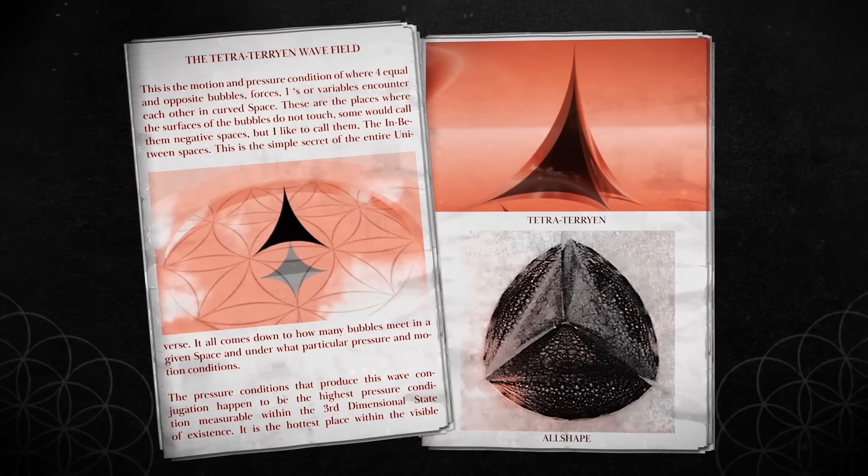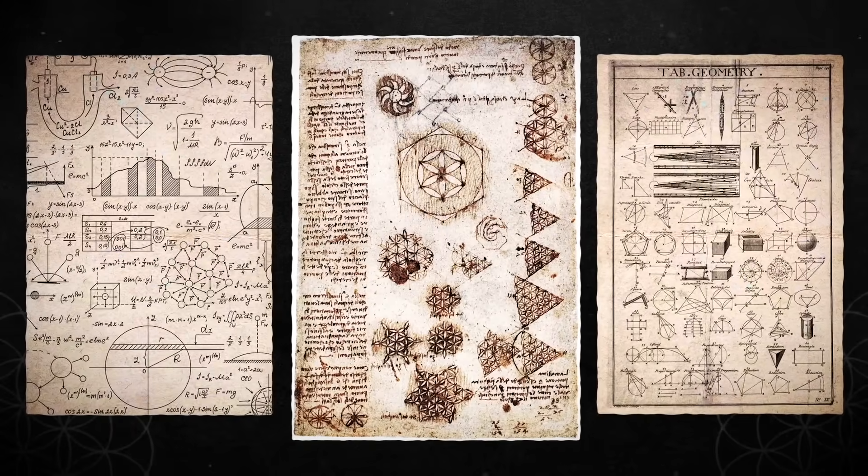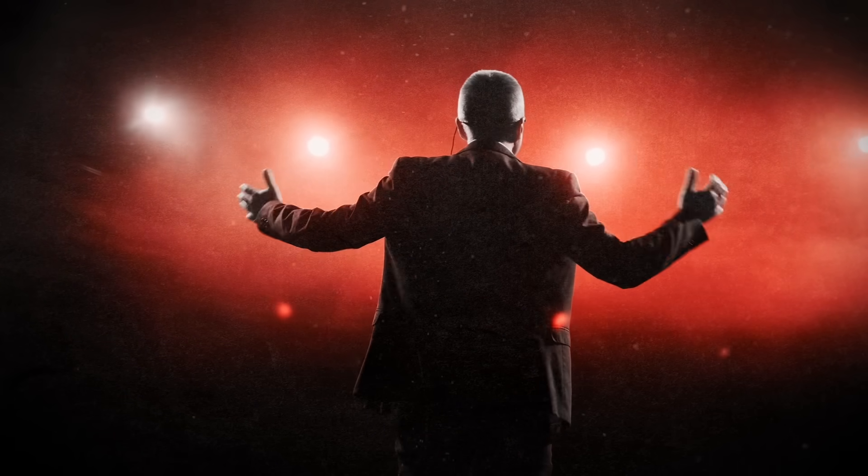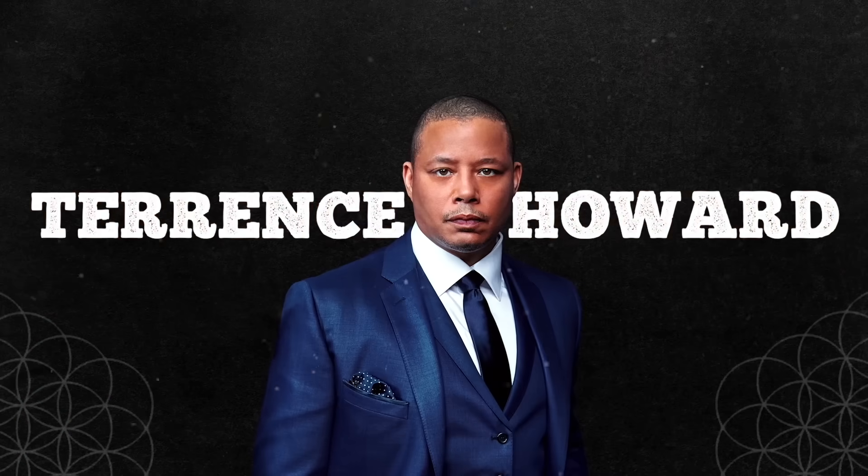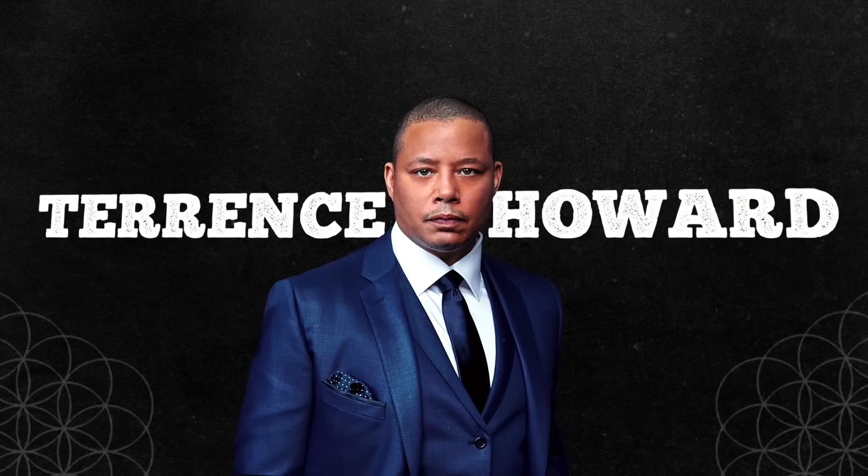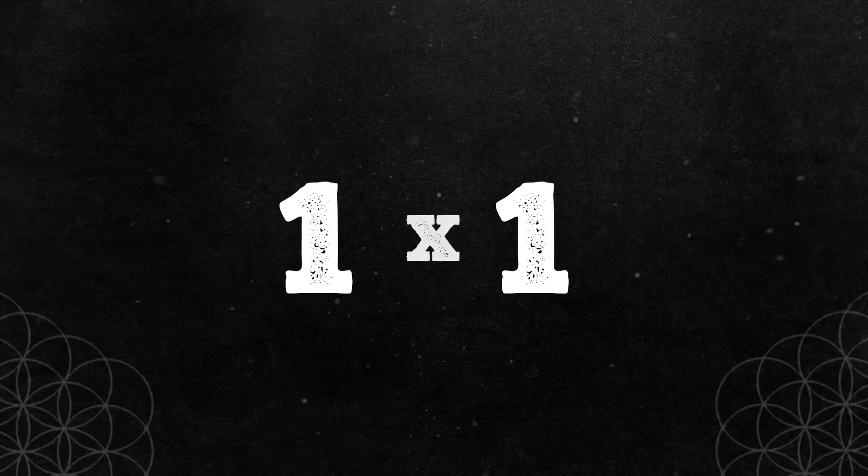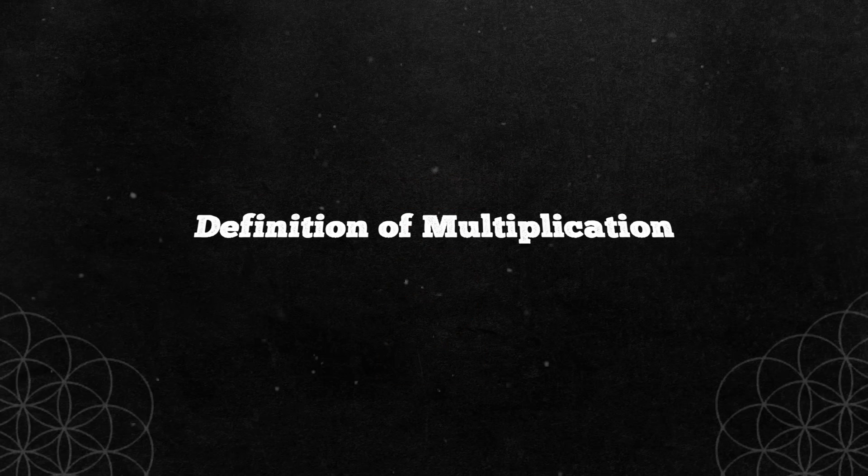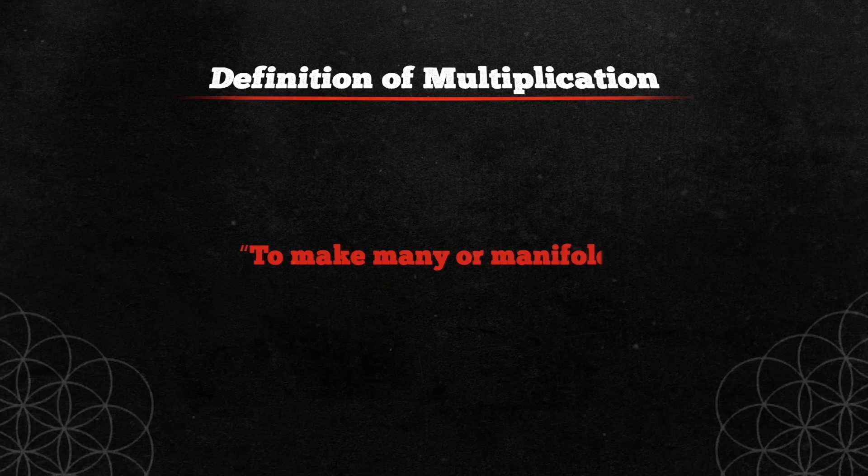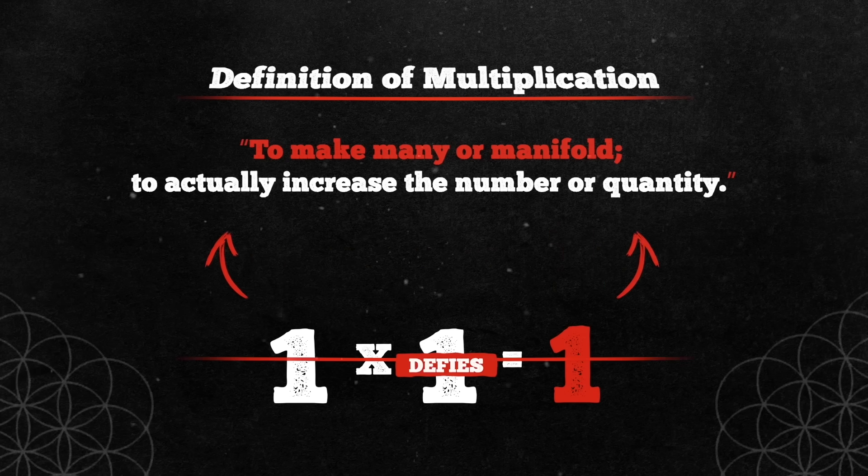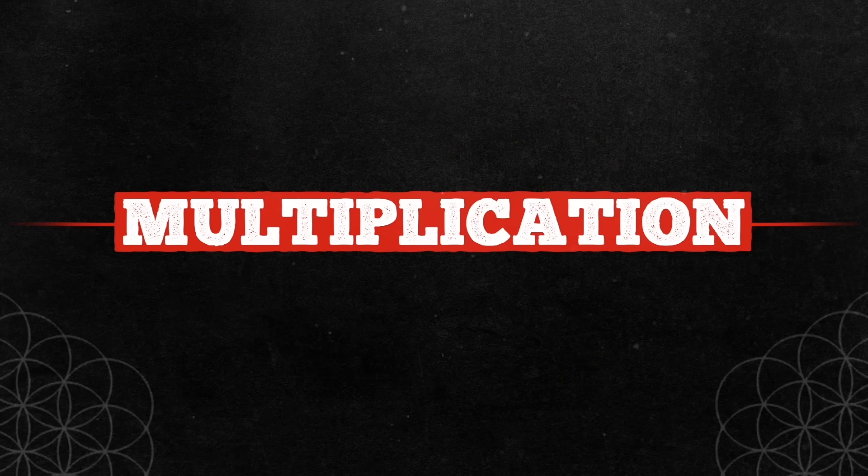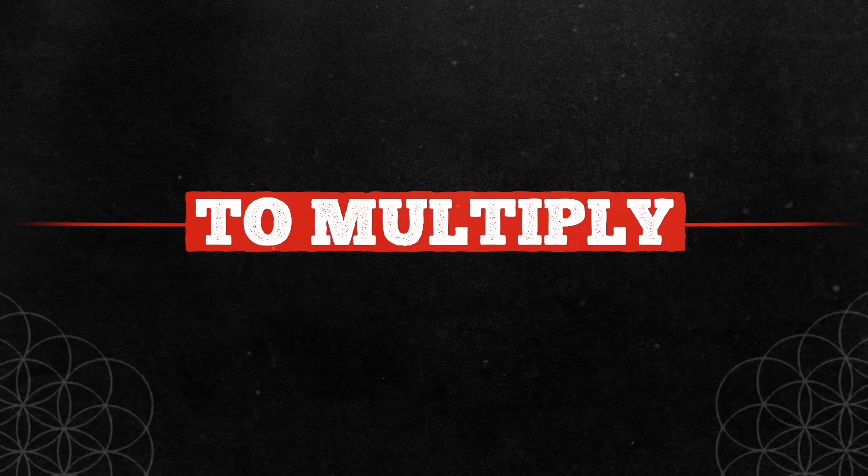One times one equals one. Or so we've been taught. We were taught around this very impressionable time that Santa Claus and the Easter Bunny were also real. The assertion that one times one equals one was implanted in our minds at a young, impressionable age, a time when questioning the accuracy of what we're taught isn't typical. As adults, however, our beliefs need to be grounded in strong, convincing arguments backed by natural phenomena, concrete evidence, and irrefutable facts.